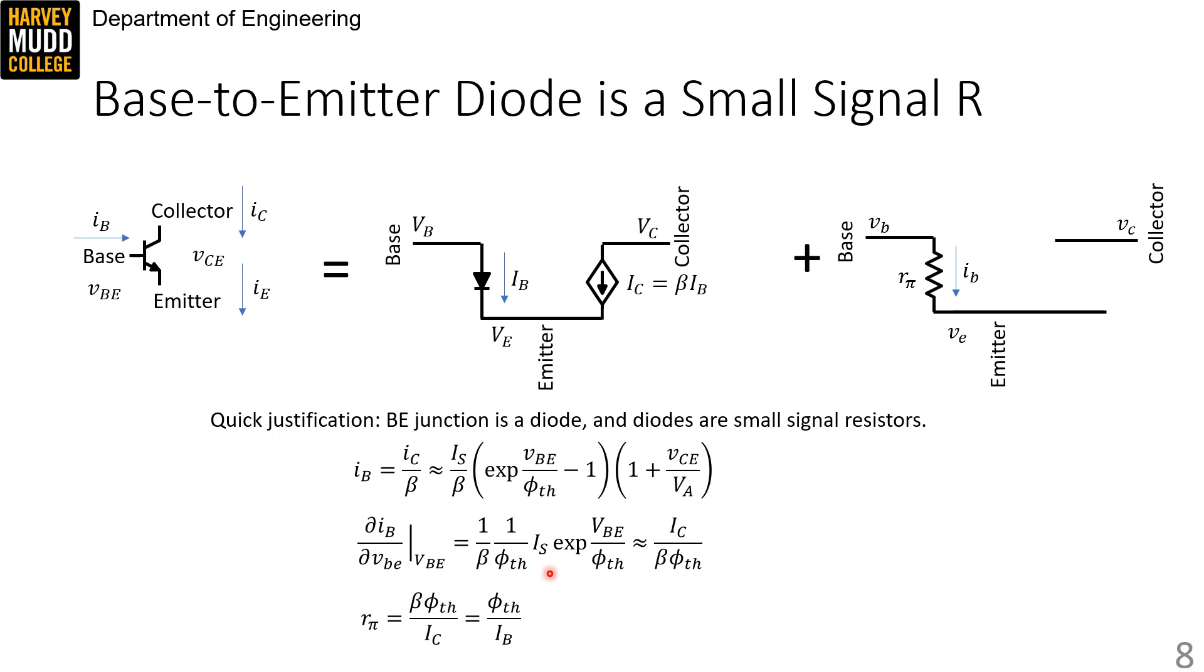Just like our diode model, we'll say this quantity is about the same as large signal IC, the only difference is this minus 1 term that we're dropping. So our local derivative is given by IC over beta phi TH.